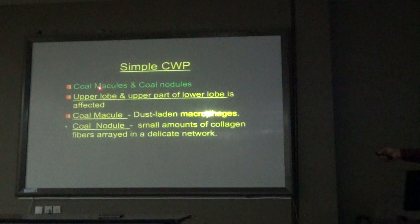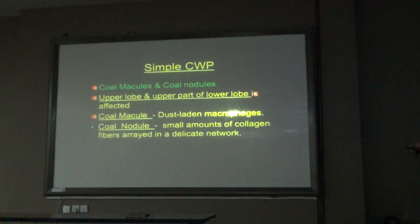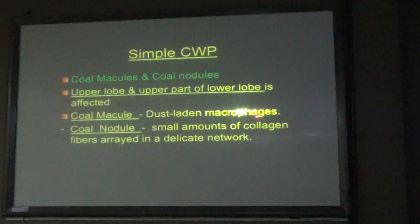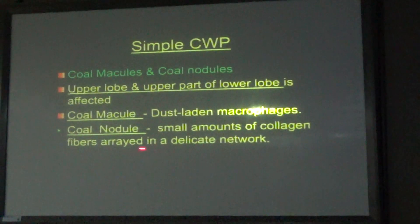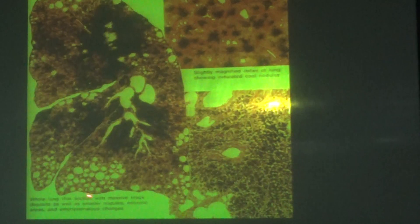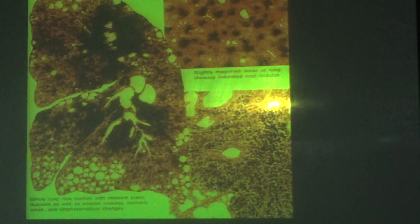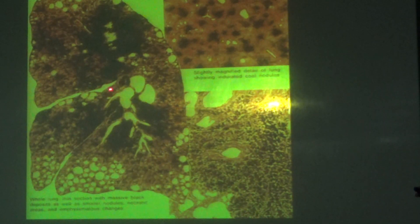In simple coal worker pneumoconiosis, the patient has coal macules and coal nodules in the lung, predominantly affecting the upper lobe and upper part of the lower lobe. Coal macules are dust-laden macrophages; coal nodules consist of a small amount of collagen fibers arranged in a delicate network. The gross lung specimen shows emphysema and coal particles scattered throughout, with increasing deposits over a period of ten or more years.